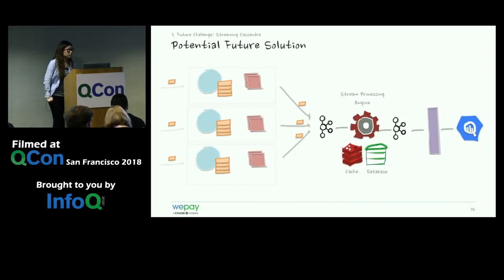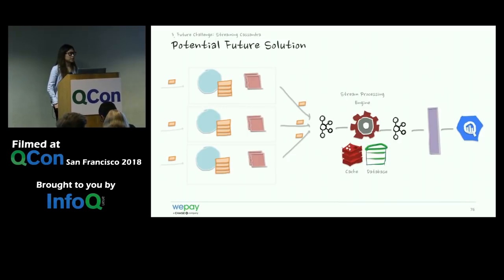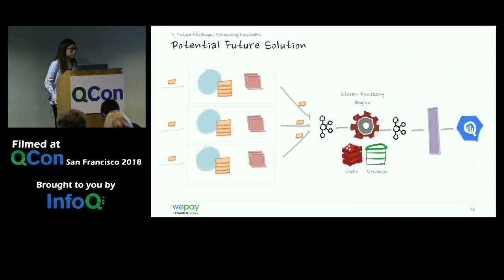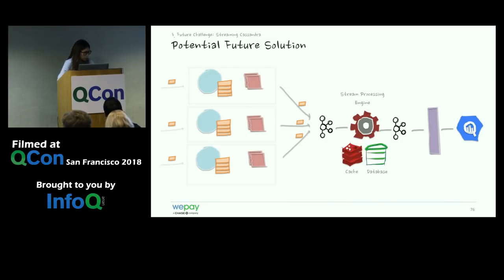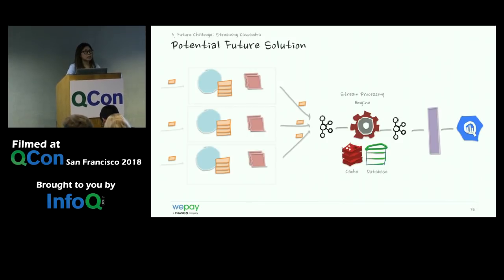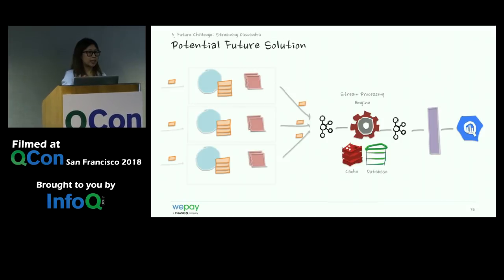An audience member asked about writing events from the application itself — writing to both Cassandra and Kafka with before and after events, then using stream processing with windowing to handle out-of-orderness. The speaker responds: in the MySQL case, this event sourcing approach means you only get the columns that changed, which we were trying to avoid. With Cassandra, it's unavoidable because the database itself doesn't do read-before-write. The audience member clarified: you could read from Cassandra before writing, send the before to Kafka, write to Cassandra, then send the after to Kafka. This could work but raises read-your-write consistency concerns.